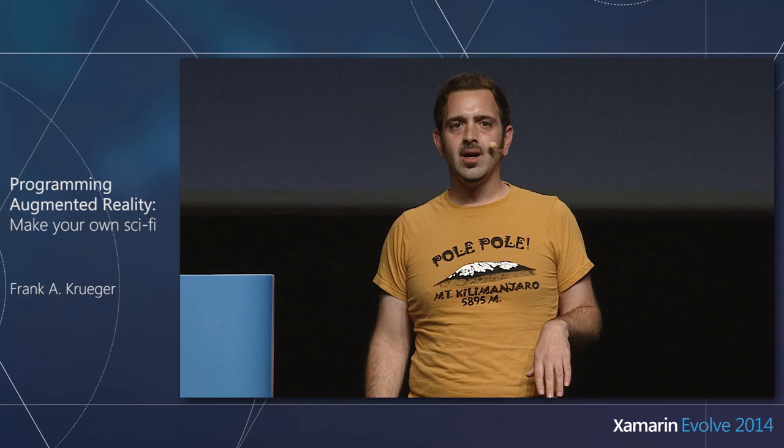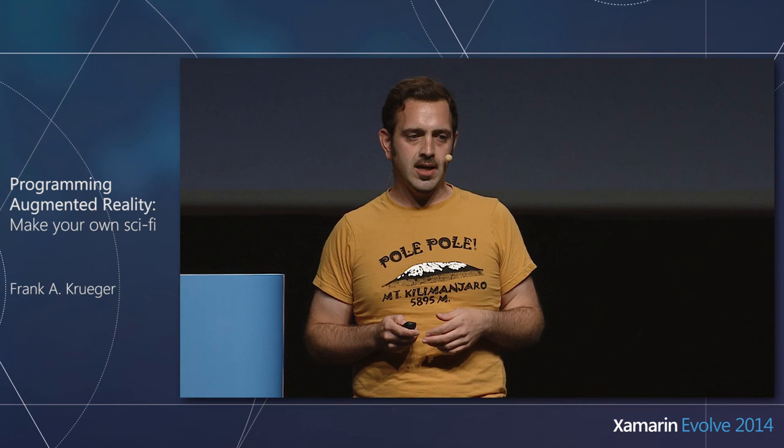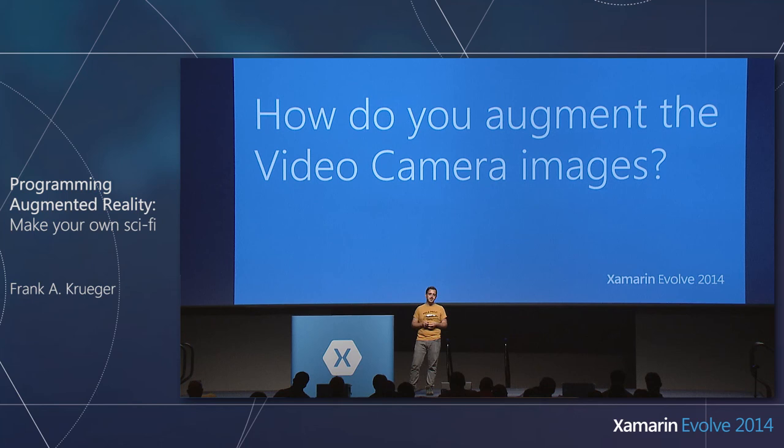So we have a camera, a location, and an orientation. We're ready to create an augmented app. But there's still the big question: how do we actually do this?